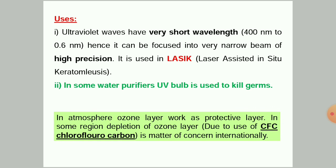Ultraviolet rays have a very short wavelength, ranging from 400 nanometers to 0.6 nanometers. Because of this, they can be focused into a very narrow, high-precision beam, which is used in LASIK eye surgery. Second, in some water purifiers, a UV bulb is used to kill germs.